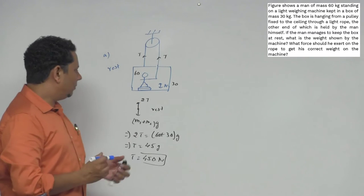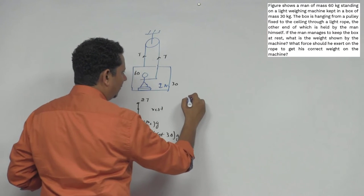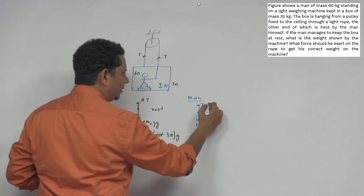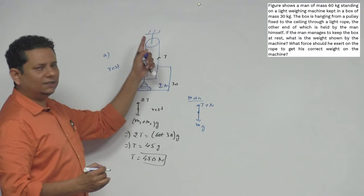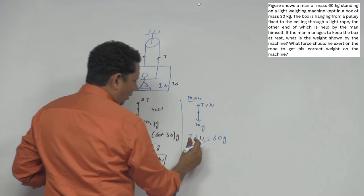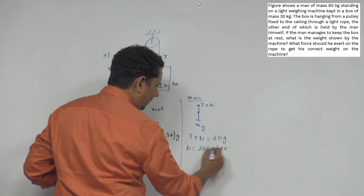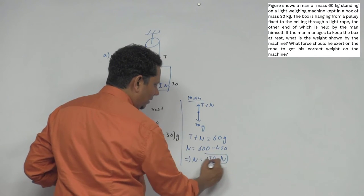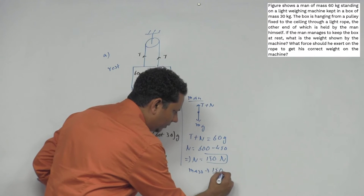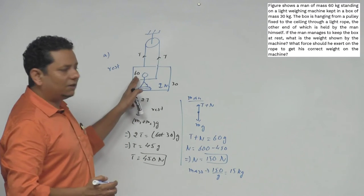Now for the normal force: tension plus normal should equal 60g. Since tension is 450, normal equals 600 minus 450, which equals 150 Newtons. The reading on the machine will be 150 divided by g, which equals 15 kg. So the actual weight is 60 kg, but the reading shows 15 kg.